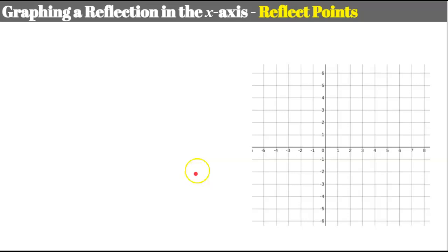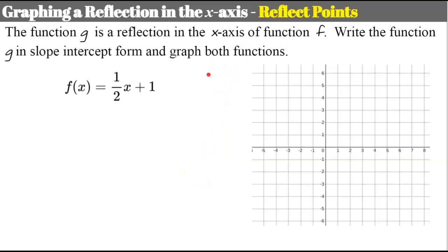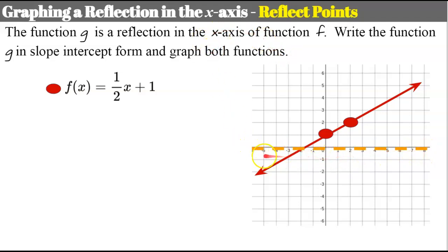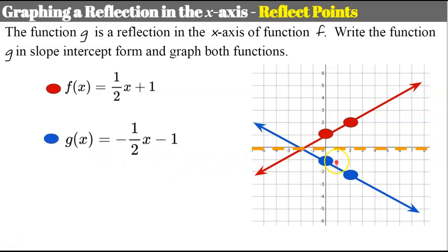Now the third way: reflecting points. Often students find this their favorite method. Graph function f — y-intercept of 1, slope of 1/2, rise 1, run 2. Now reflecting over the x-axis: one point is 1 above, so its reflection is 1 below. The next point is 2 above, so 2 below. Connect the points to get function g: y-intercept of negative 1 and slope of negative 1/2. Three ways to reflect in the x-axis.